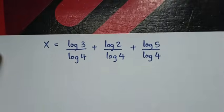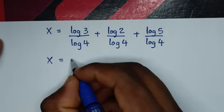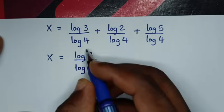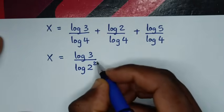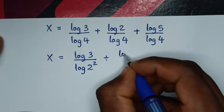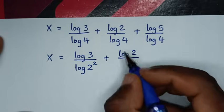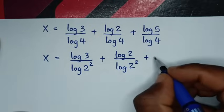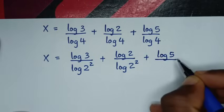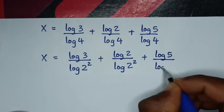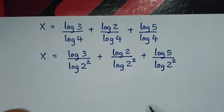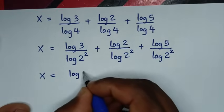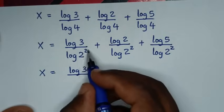Then it will be x is equal to log of 3 over log of 4, and 4 is the same as 2 squared. Then plus log of 2 over log of 4, where log of 4 is 2 squared. Then plus log of 5 over log of 4, where 4 is 2 squared.